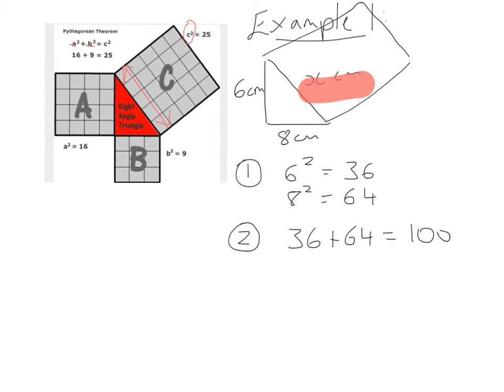However, we're not finished yet because now we've found the area of that square. We don't want the entire area, we just want one of the lengths of the sides of the square. So we're going to go backwards from the area by square rooting 100, and therefore the answer is going to be 10 centimeters.